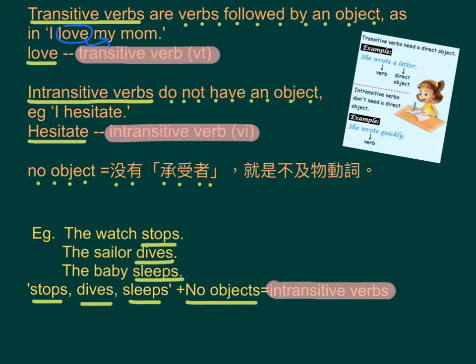In the dictionary, transitive verbs are commonly marked as VT. Intransitive verbs do not have an object. For example: 'I hesitate.' Here, 'hesitate' is an intransitive verb, commonly marked as VI in the dictionary.